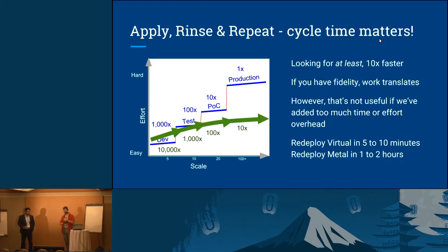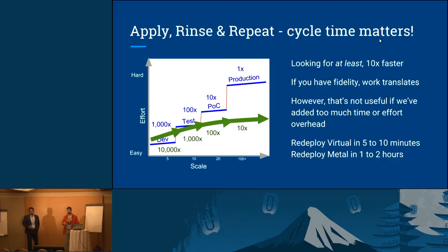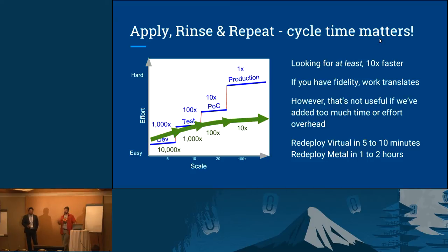That would translate into a faster and faster deployment cycle. We're not trying to hide that we've got a big easy button that's going to deploy heterogeneous clouds and distributed architectures and build software-defined networks between them. What you're going to need to do is learn, iterate, improve, and go through that cycle. The faster you can go through that cycle, the more chance you have of succeeding. Even if you could do it once, you're not going to be able to maintain it.